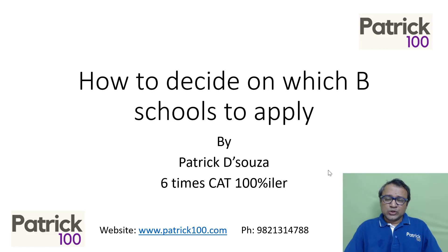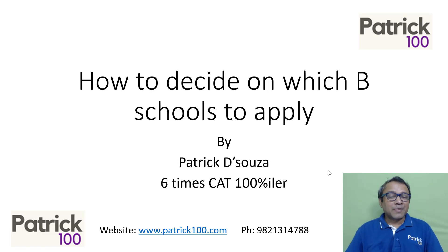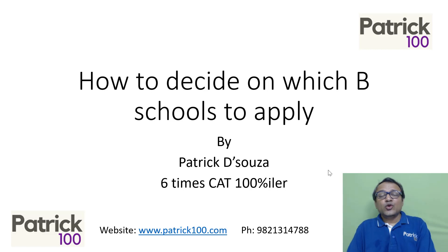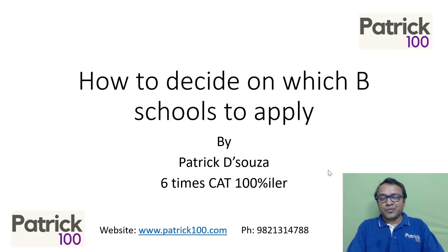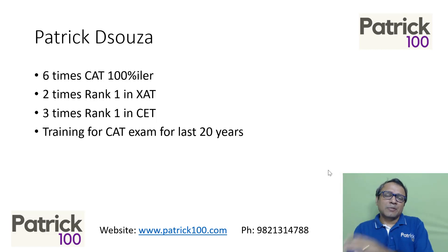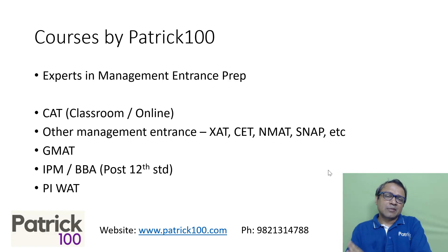The next stage: once you apply for the exams, the next stage is to apply for the colleges. You can't blindly apply for colleges. If you apply for CAT, you're applying to almost all the IIMs. But what about the other colleges? You need to decide on the B schools that you need to apply. So this video is regarding that — what parameters do you look at? I've been training students for the last 20 years, so I'm fairly comfortable with the exams.